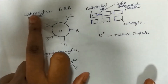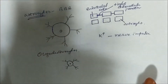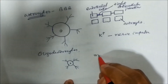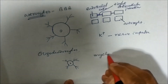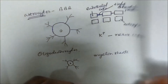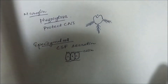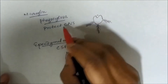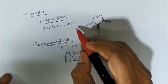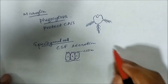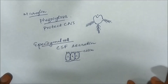To summarize the CNS neuroglia: astrocytes form the blood-brain barrier; oligodendrocytes provide the myelin sheath; microglia help in phagocytosis and protect the CNS from microbes; and ependymal cells help in CSF secretion.